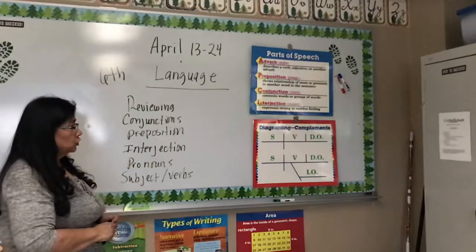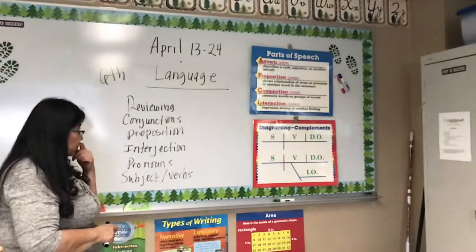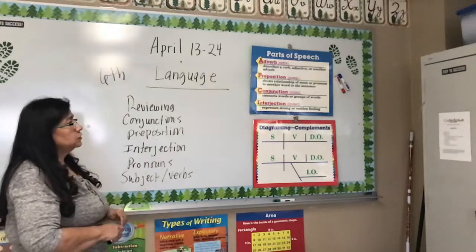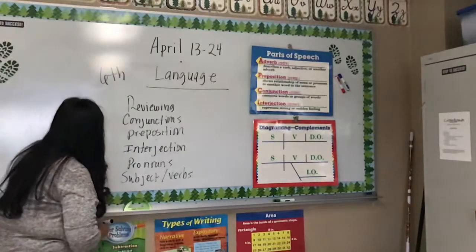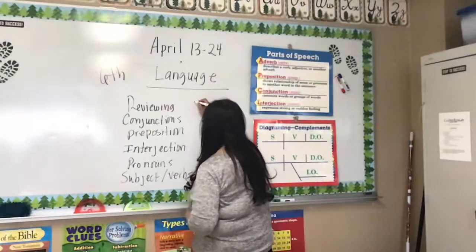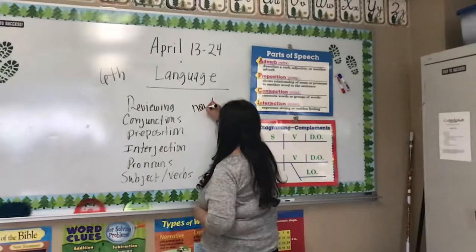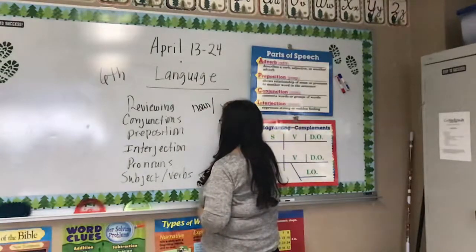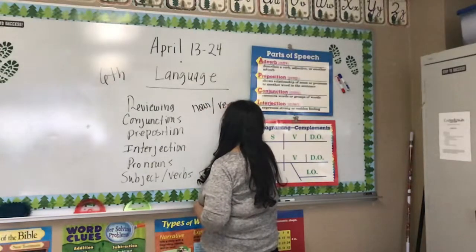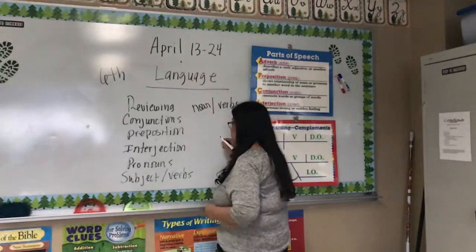I have these charts put up here for you. We're going to be reviewing conjunctions, prepositions, interjections, pronouns, and subjects and verbs. Remember that your subject is what the sentence is talking about — it's usually your noun. And then your verbs are going to be what the noun is doing.